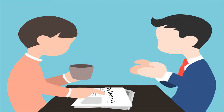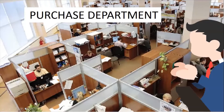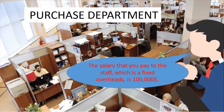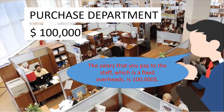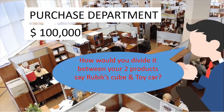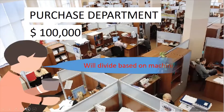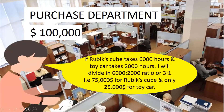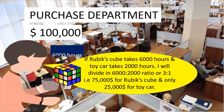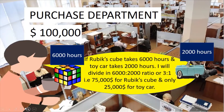Let me illustrate. This is your purchase department. The salary that you pay to the staff, which is a fixed overhead, is $100,000. How would you divide it between your two products, say Rubik's Cube and Toy Car? We'll divide based on machine hours. If Rubik's Cube takes 6,000 hours and Toy Car takes 2,000 hours, I will divide in a 6,000 to 2,000 ratio, or simplified 3 to 1 — that is $75,000 for Rubik's Cube and only $25,000 for the Toy Car.